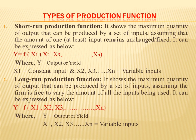Now let's discuss the long-term production function. The long-term production function shows the maximum quantity of output that can be produced by a set of inputs, assuming that the firm is free to vary the amount of all inputs being used. In this, the firm can change and vary all the inputs used in the production process. It means none of the factors of production remains constant, unchanged, or fixed.